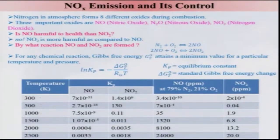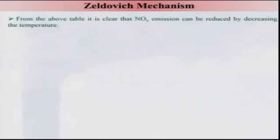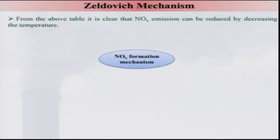Both NO2 and NO levels increase with temperature, meaning from an equilibrium standpoint the formation is essentially temperature-dependent. Therefore, one can get the clue that NOX emission can be reduced by decreasing the temperature, particularly when using air as the oxidizing medium.